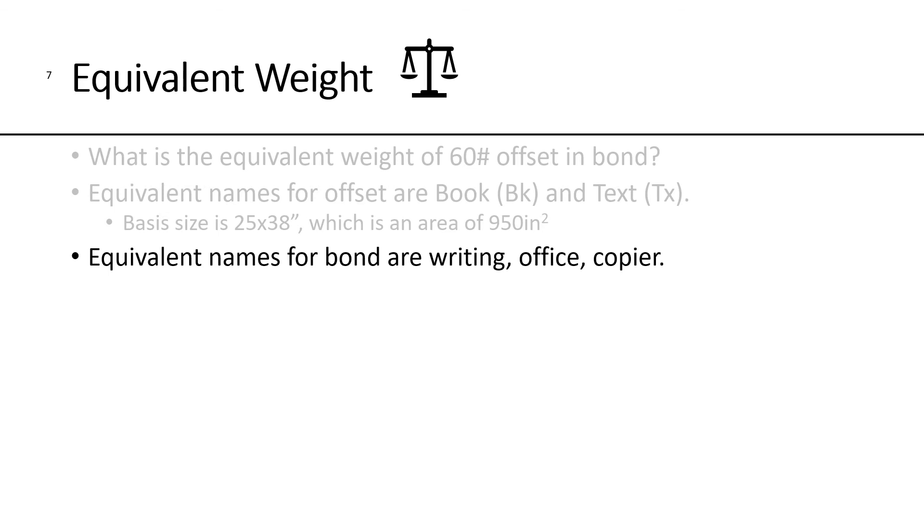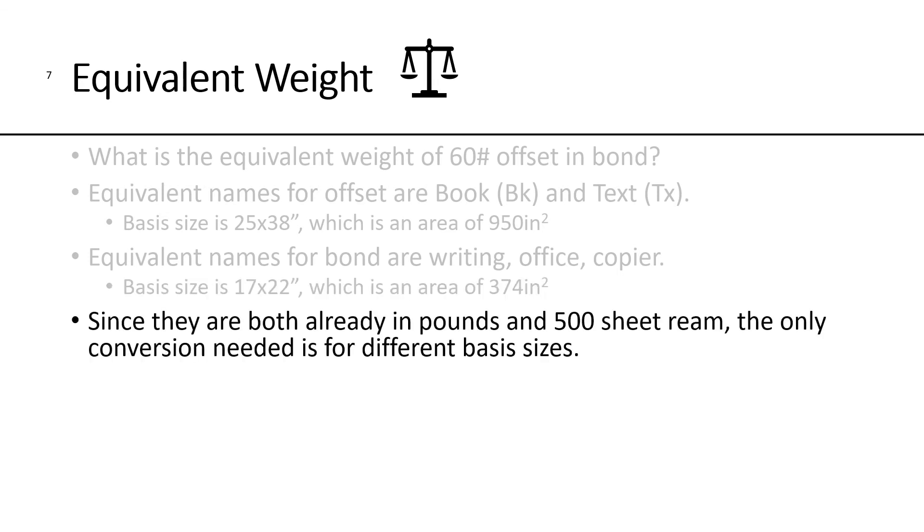Equivalent names for bond would be things like writing paper, office, or copier paper. And the basis size here is 17 by 22 inches. And if you calculate the area, it's 374 square inches. Since they both already are in pounds and they're 500 sheets in a ream, the only conversion we need to do is to compensate for the different basis sizes.